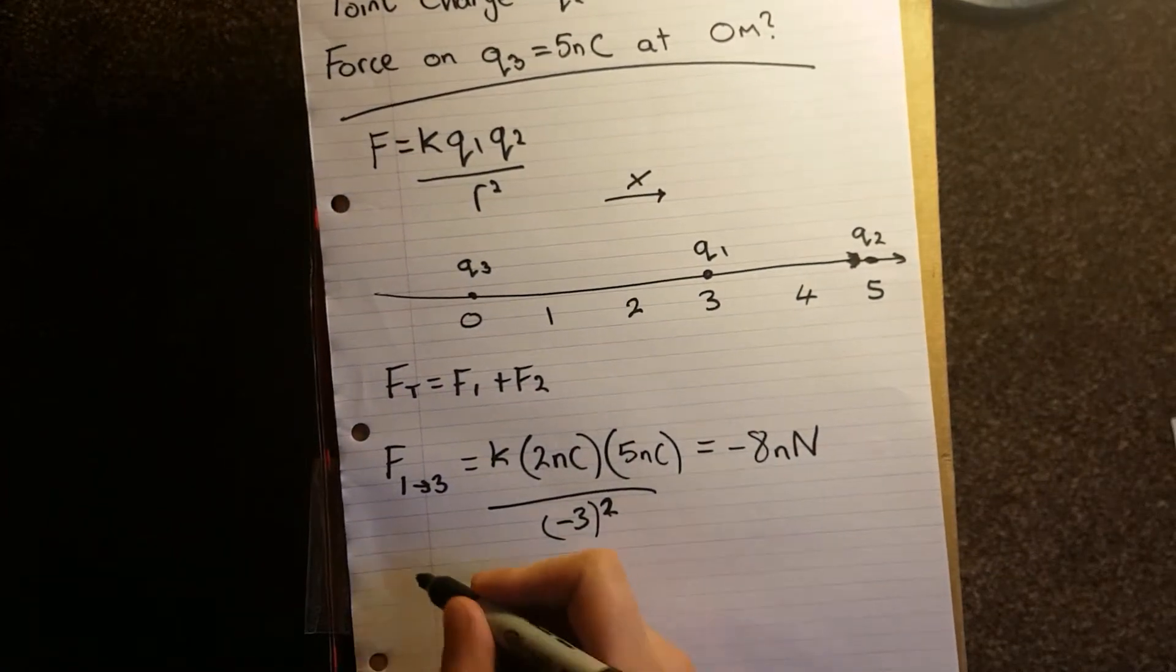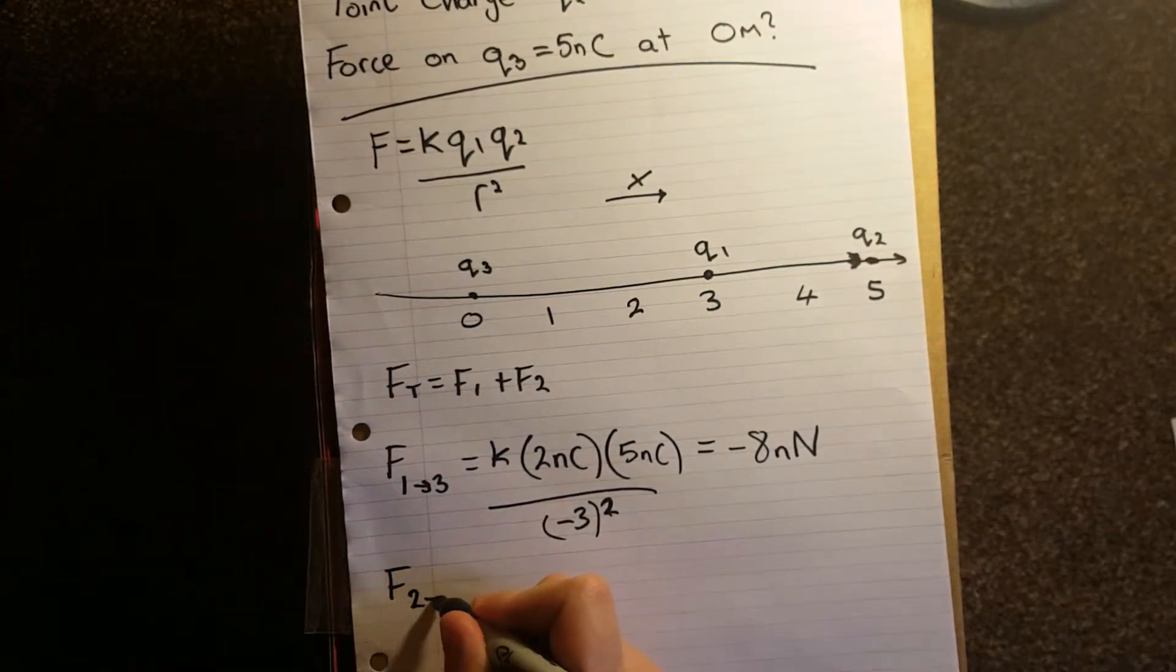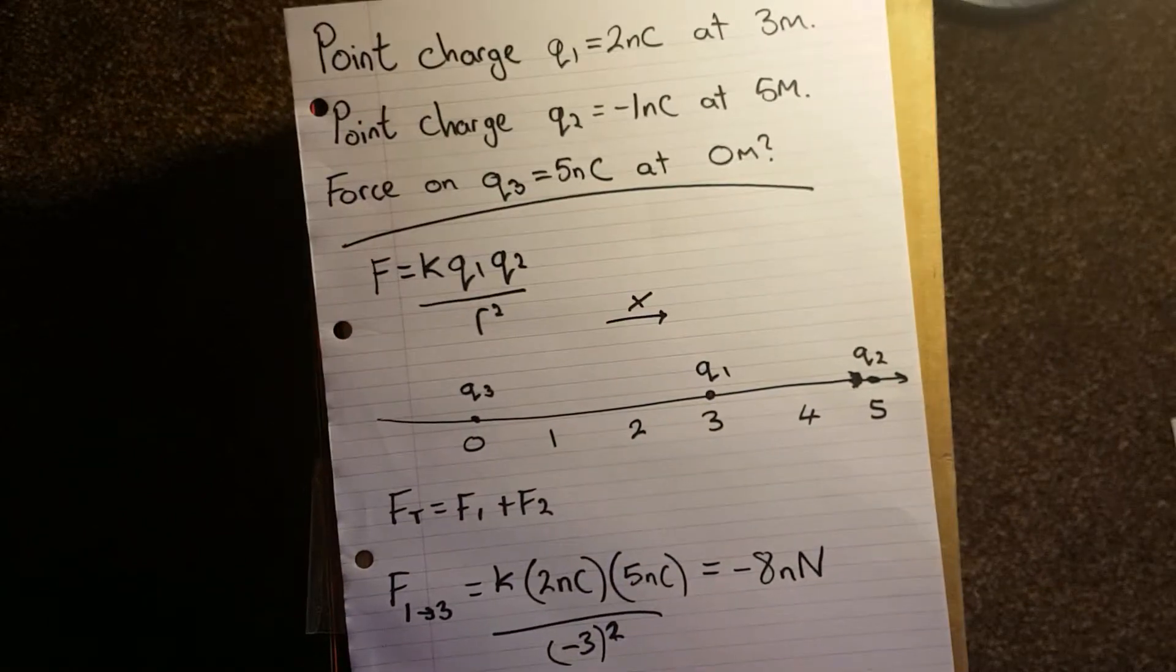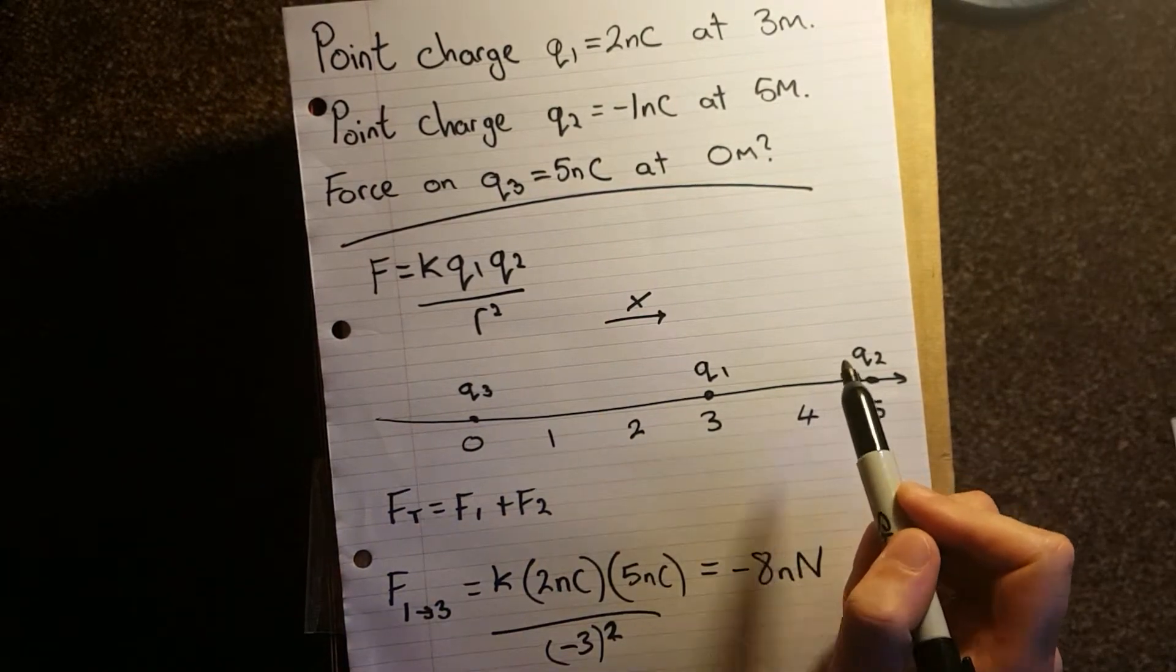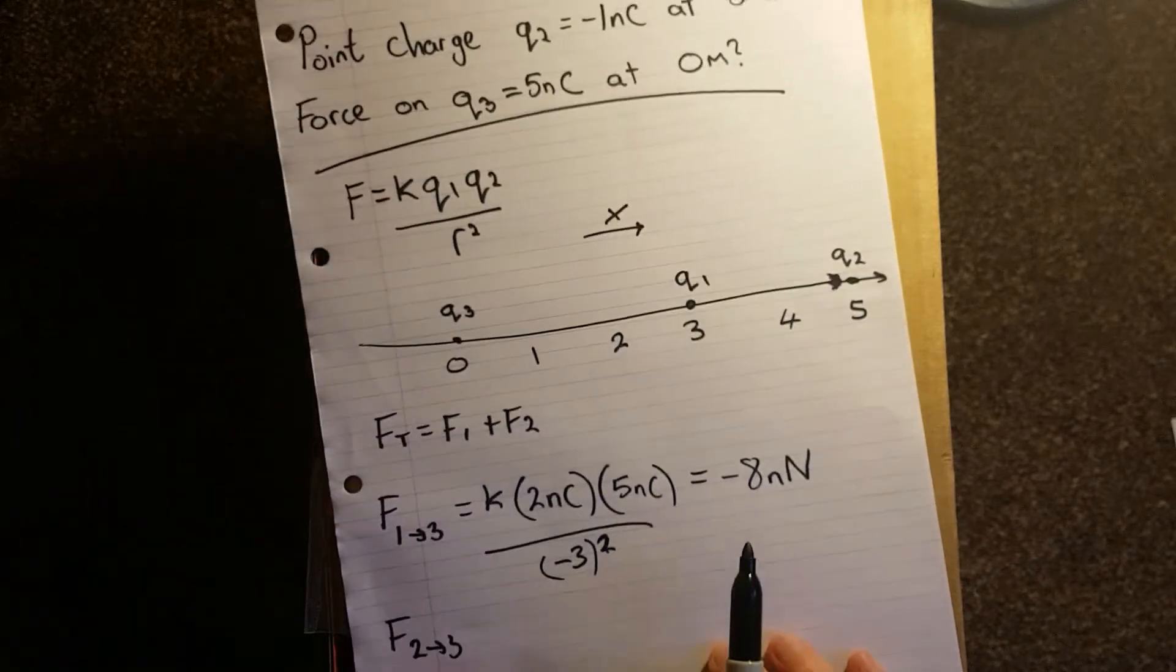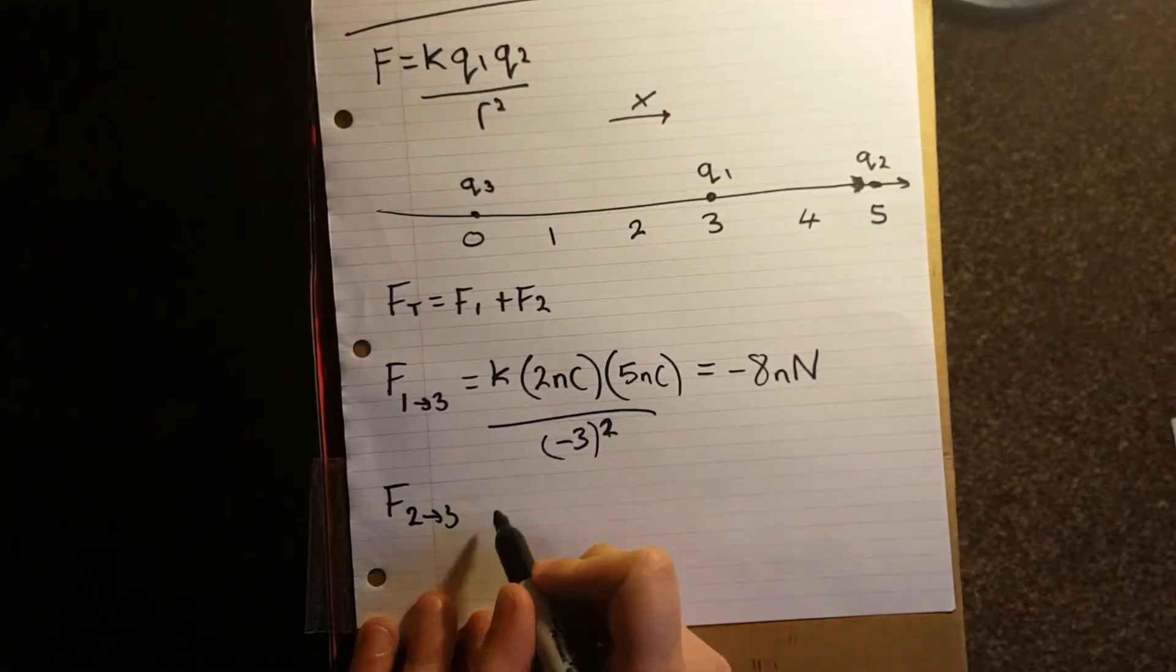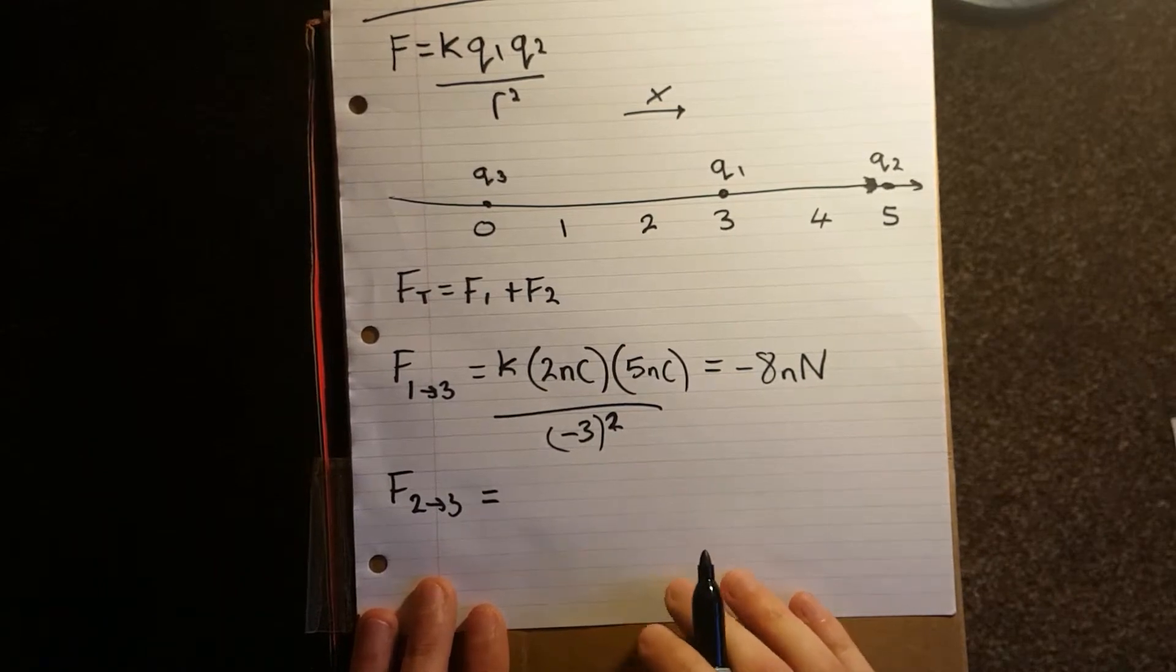Similarly, when we work out Q2, the force from 2 to 3 is going to be a positive force, because Q3 wants to move towards Q2, because it's attractive. Just bear that in mind, because you can get the opposite signs on your calculator.